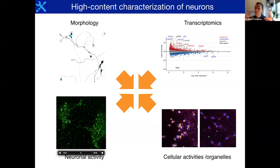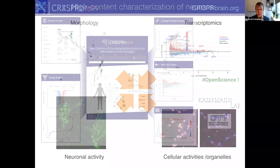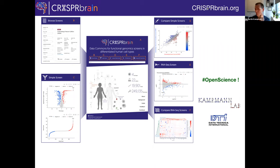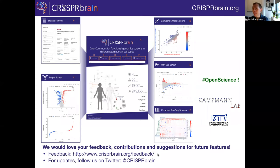To make systematic comparisons possible and to work with the whole scientific community, we launched a web portal called CRISPR Brain — a great collaboration with Data Technica International. CRISPR Brain is a data commons where genetic screens for different phenotypes in different cell types are curated and made comparable. We would love people to use the website, give us feedback, follow us on Twitter, and contribute suggestions. I'm quite hopeful this will become a real exciting venue to answer all of these important questions.